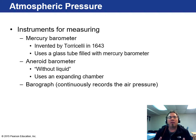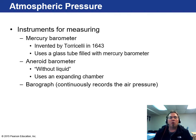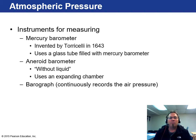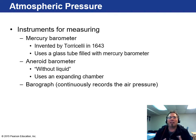The mercury barometer was invented by Torricelli in 1643, a student of Galileo's. He used a glass tube filled with mercury, inverted it, and placed it in a well of mercury. When it equalized, that told him the air pressure. Today, because mercury is toxic, we use aneroid barometers — meaning 'without liquid' — which use an expanding chamber to measure slight differences in air pressure. When a pen is attached to record changes over time, we call it a barograph, similar to a seismograph in earthquakes.